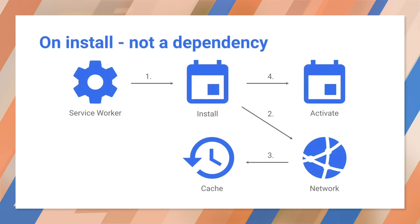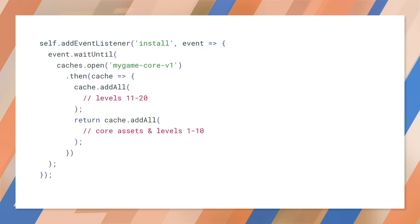On install, not a dependency is a similar strategy, but it won't delay install completing and won't cause installation to fail if caching fails. This is great for larger resources that aren't needed straightaway, such as assets for later levels of a game. In the code example, we're not passing the caches.addAll promise for levels 11 to 20 back to event waitUntil — so even if it fails, the game will still be available offline. You'll have to cater for the possible absence of those levels and reattempt caching them if they're missing.